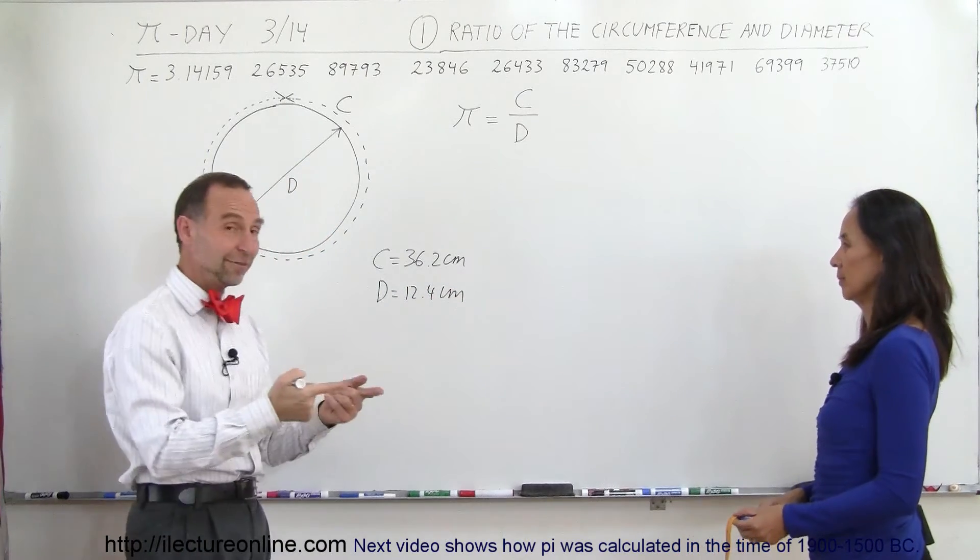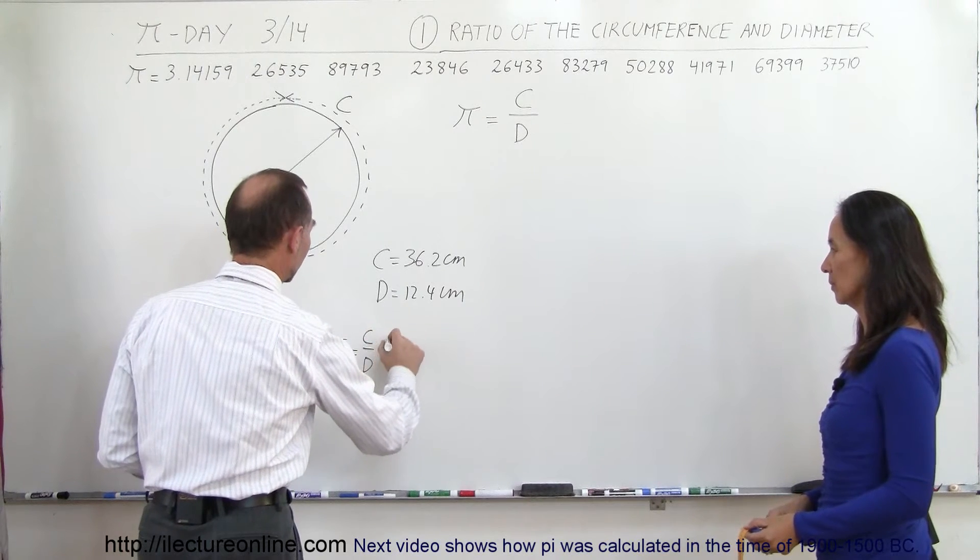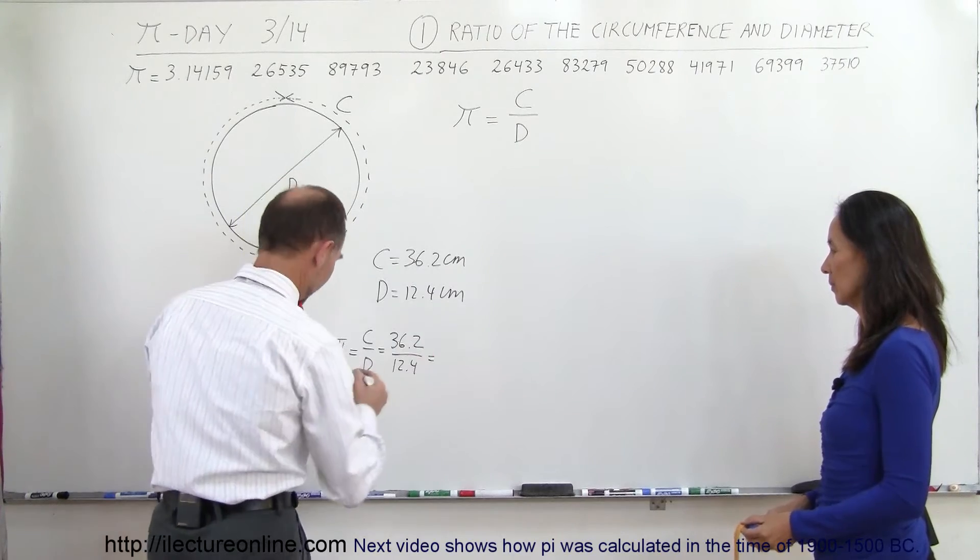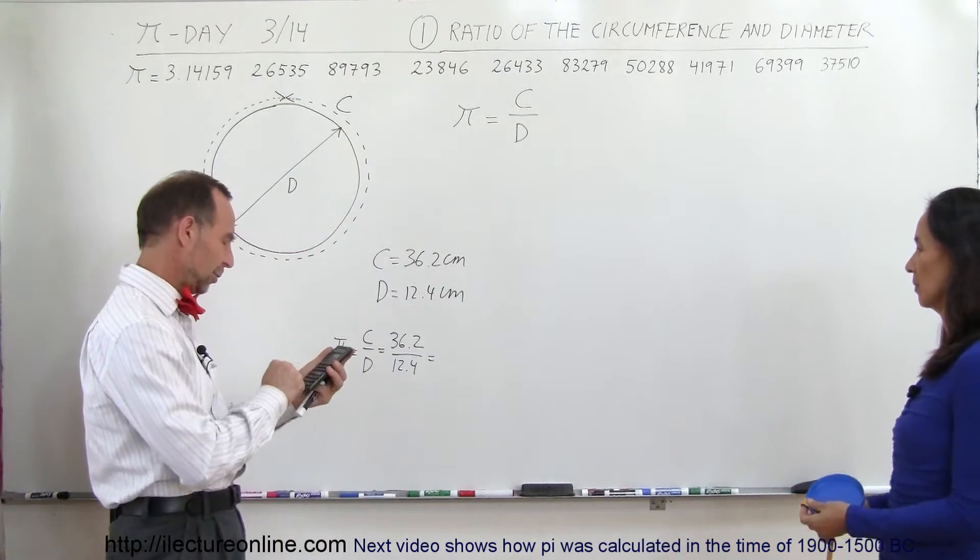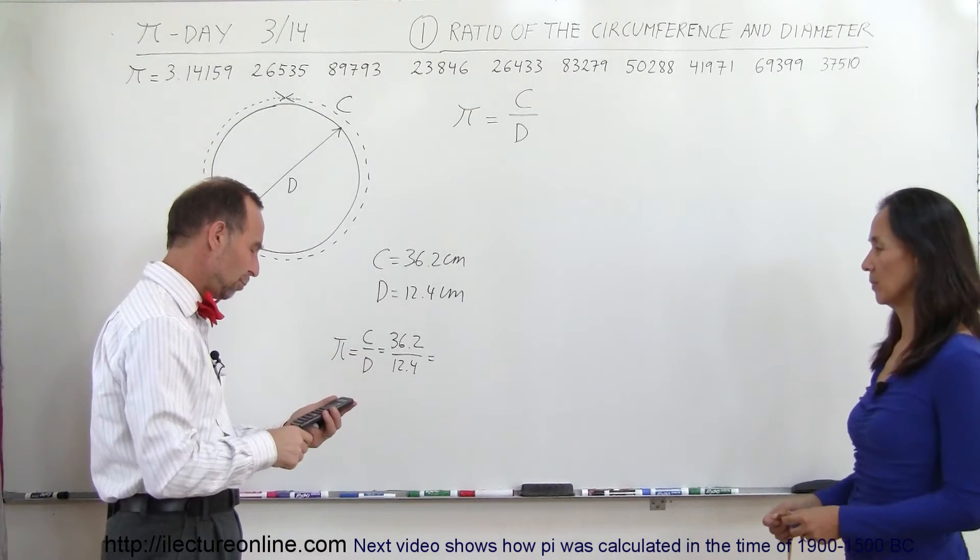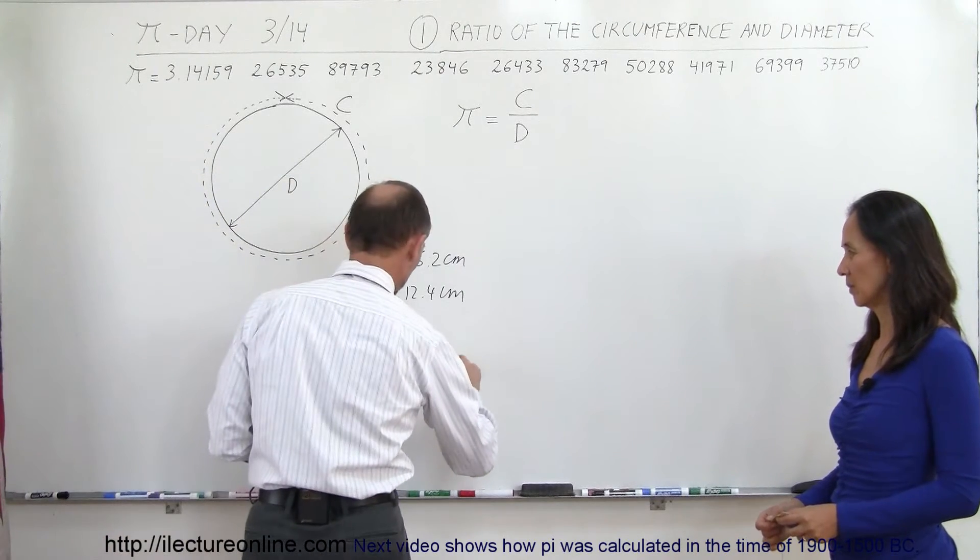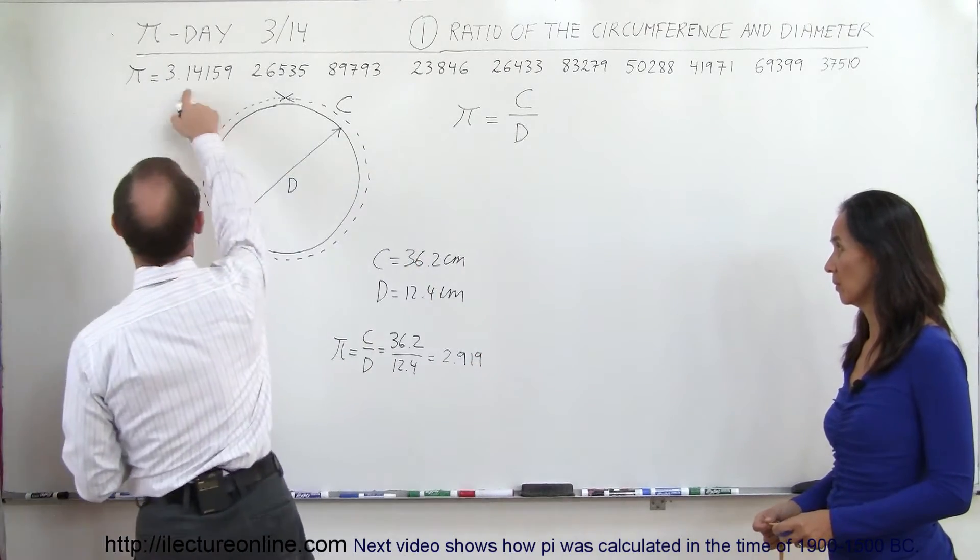According to that, we have pi equals the circumference divided by diameter, which is equal to 36.2 divided by 12.4. So 36.2 divided by 12.4, and we get 2.919. Not that close, is it? We're not quite where we want it to be.